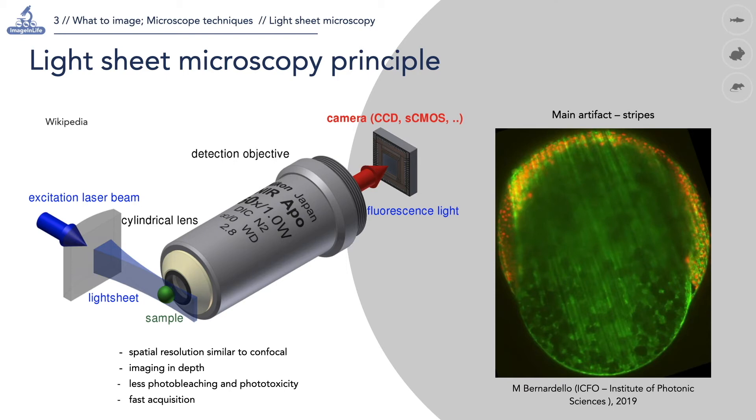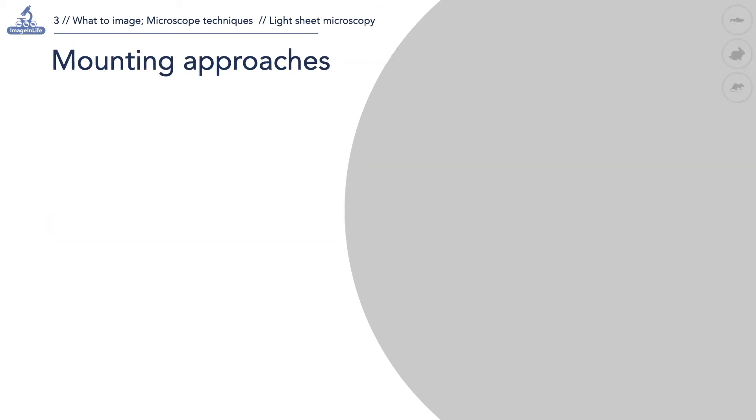Light sheet microscopy is well suited to image samples in three dimensions and over time. Samples can be as large as few millimeters, fixed or live.